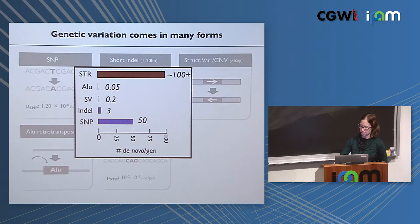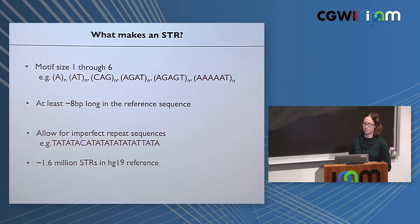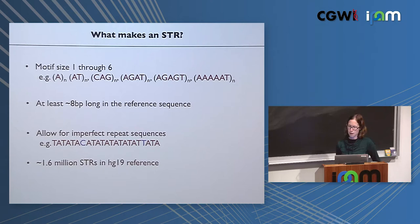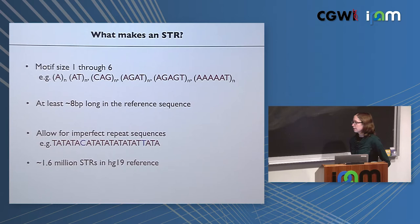Our definition of STRs includes motif sizes from one to six base pairs — anything from homopolymers up to hexanucleotide repeats — at least eight base pairs long in the reference genome. We allow for imperfections in the repeat sequence, such as SNPs or indels within the repeat up to a certain threshold. Using our definition, we get about a million and a half STRs in the human reference genome.